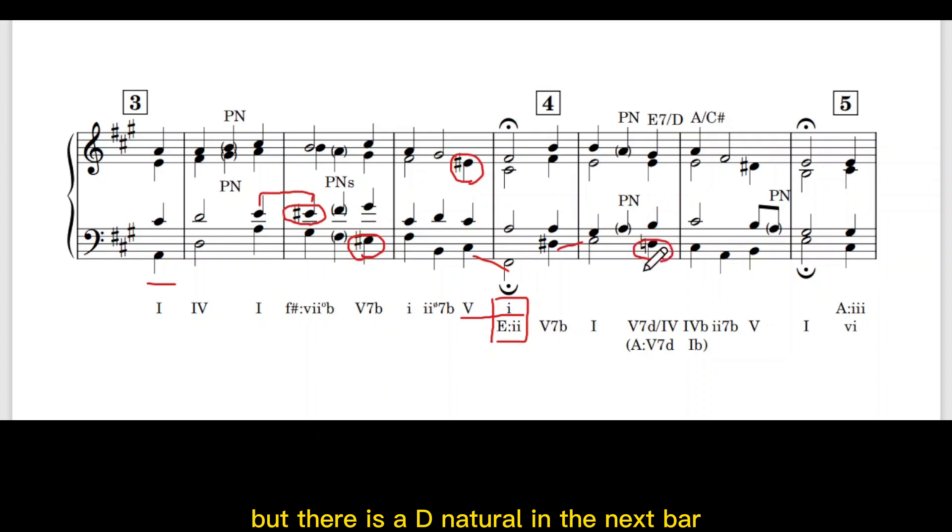But there is a D natural in the next bar. We analyze it as secondary dominant. 5-7D of 4 resolves to 4B or temporary modulation A major 5-7D to 1B. The fourth phrase ends in E major with a perfect cadence and the leading note D sharp.